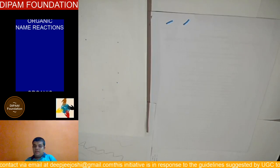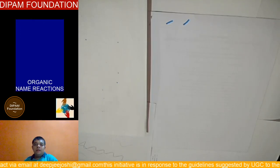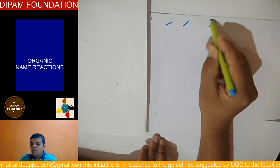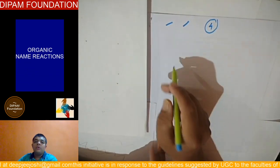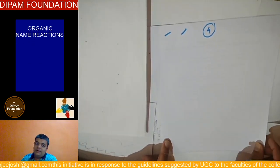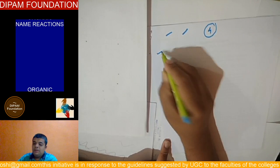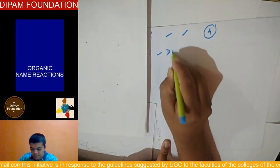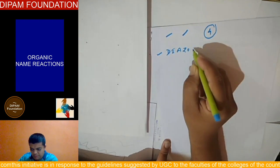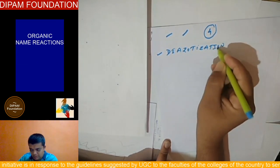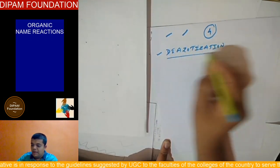So friends, organic name reactions, you know, part four. We are going to learn a very simple reaction, diazotization reaction.